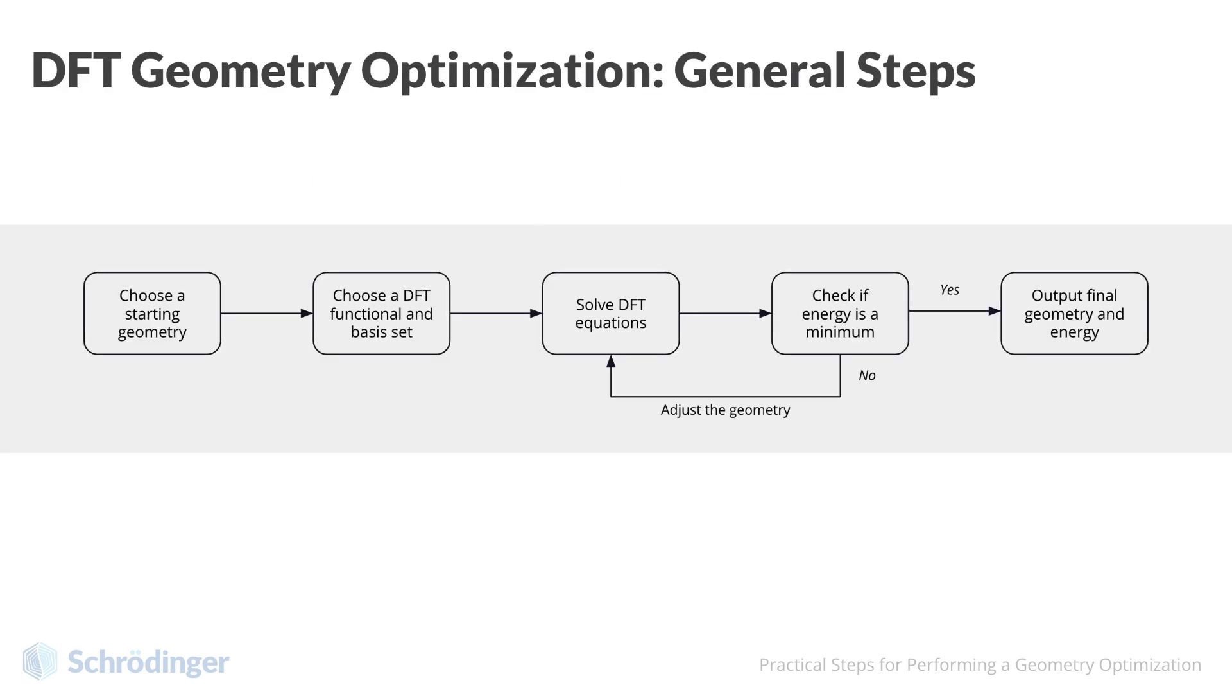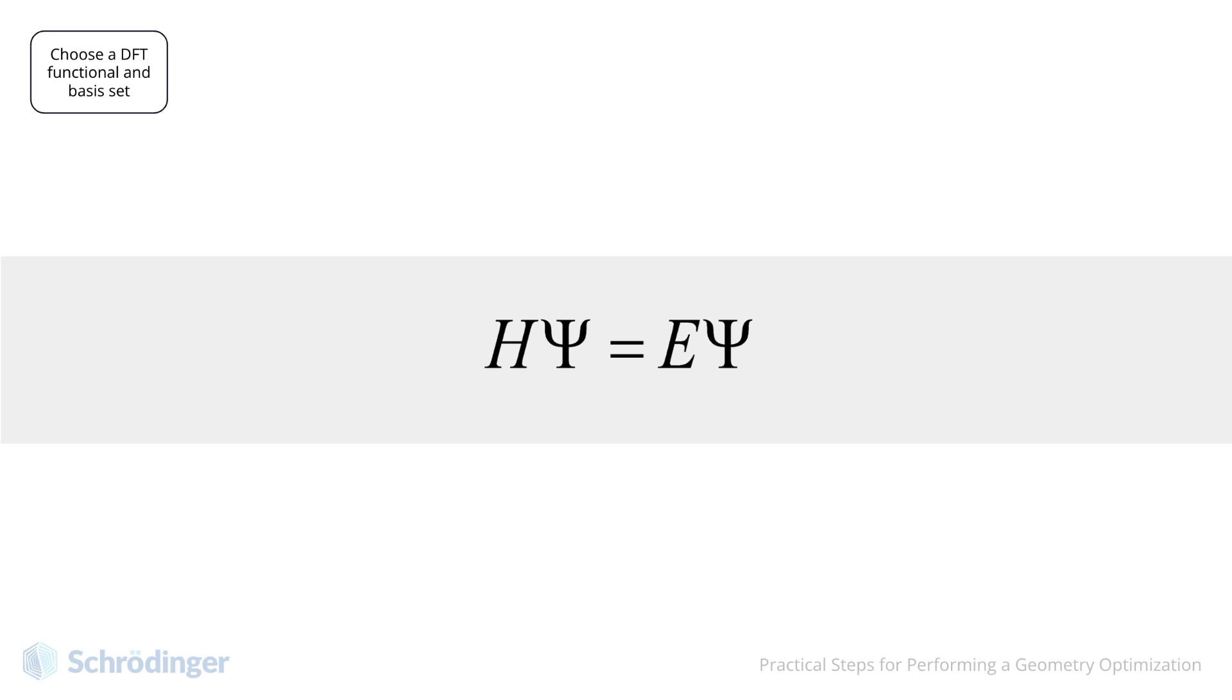Once we have read the coordinates, we need to select two essential settings. These are the functional and the basis set. It would be outside the scope of this video to give comprehensive definitions of these two terms. Let us use a very rough explanation, in which we can use the Schrödinger equation to explain these concepts.